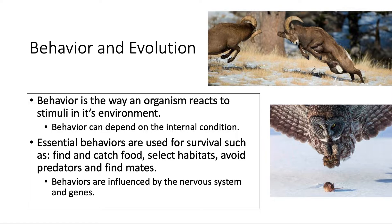First part: behavior and evolution. Behavior is a way an organism reacts to stimuli in its environment. We talked a little bit about response last chapter, Chapter 28, and we talked about movement and support. Now this behavior is going to be a response to that stimulus.